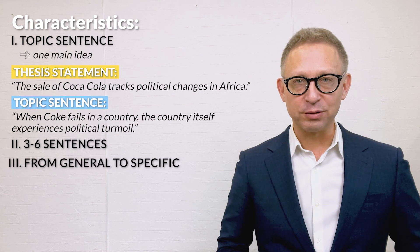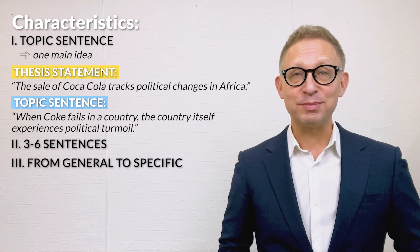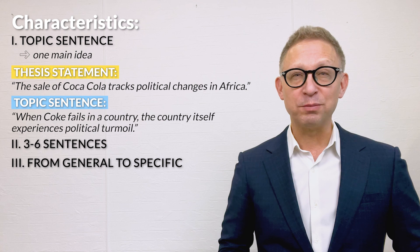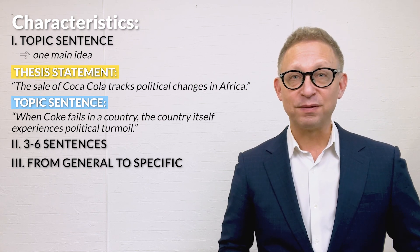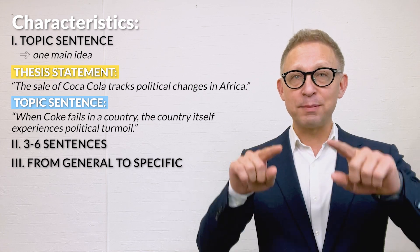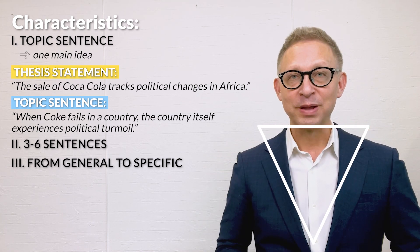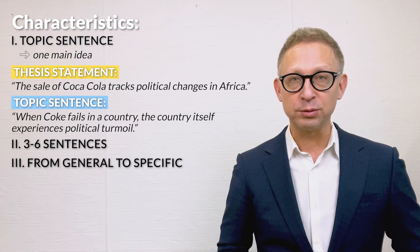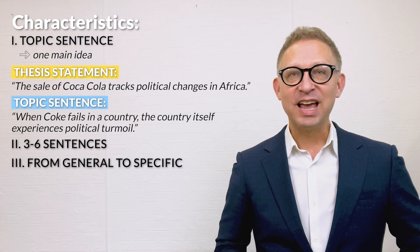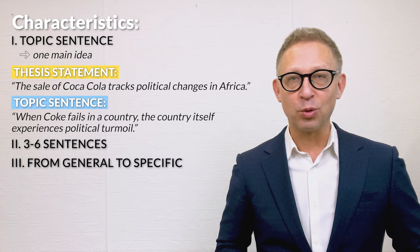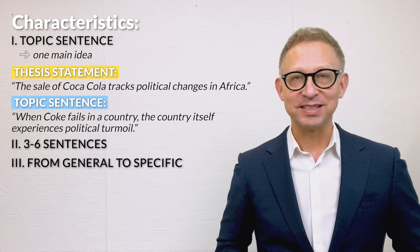Thirdly, information in the paragraph moves from general to specific. In academic essays where you must prove an idea or opinion, the idea flow resembles an inverted pyramid or triangle — you go from a general statement, such as the topic sentence, and move gradually to more specific points.